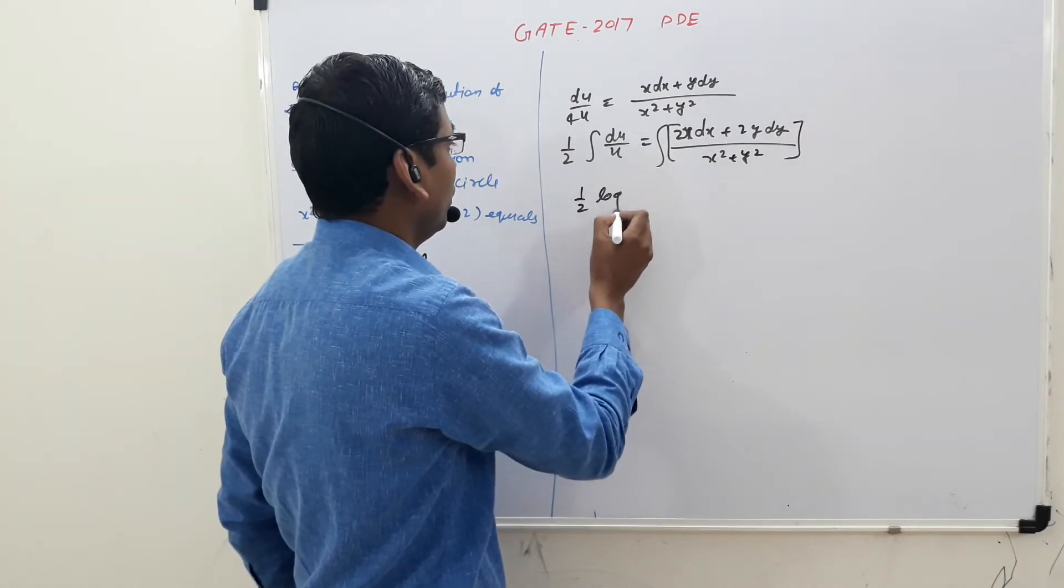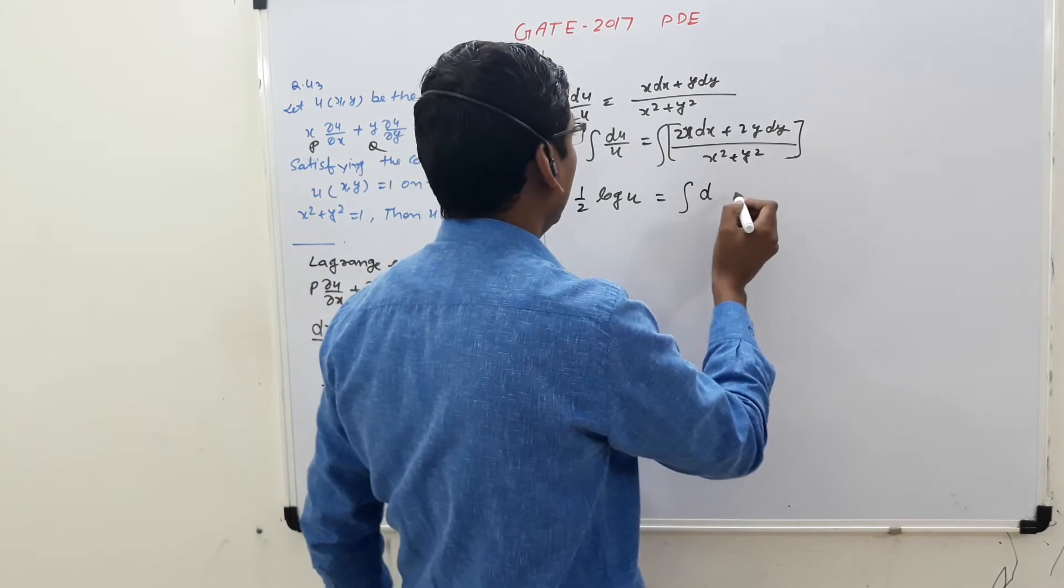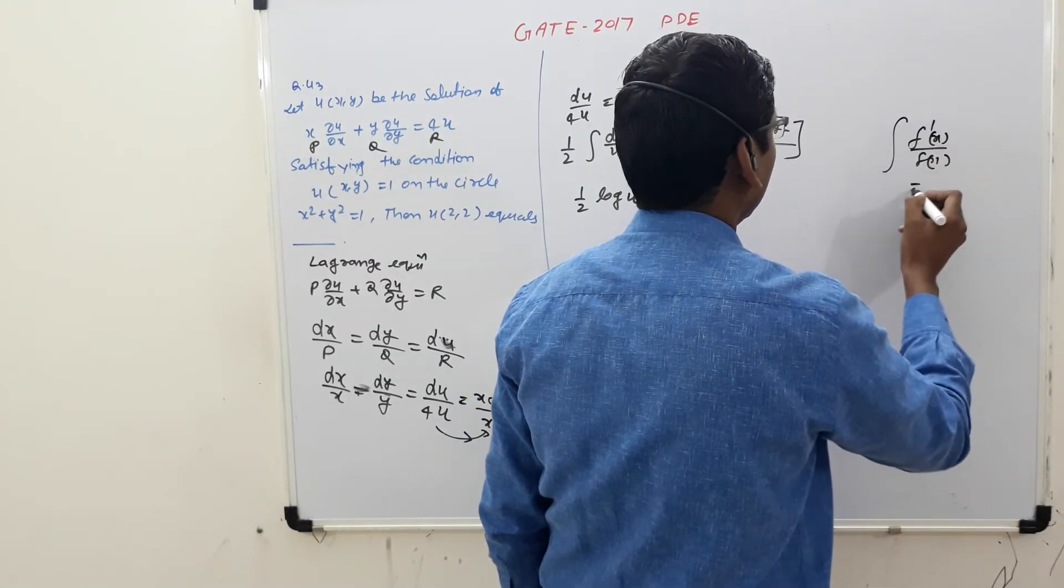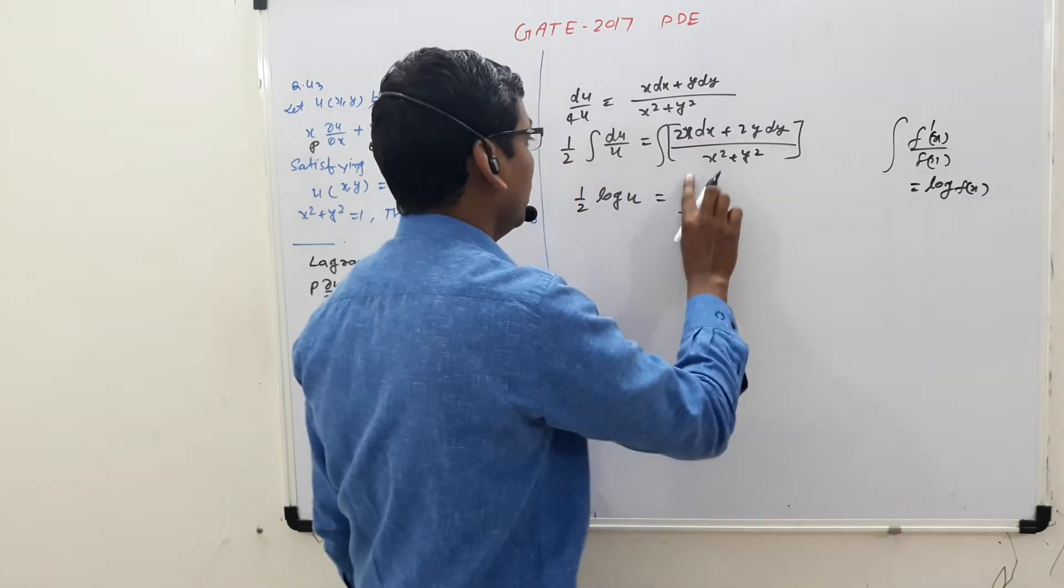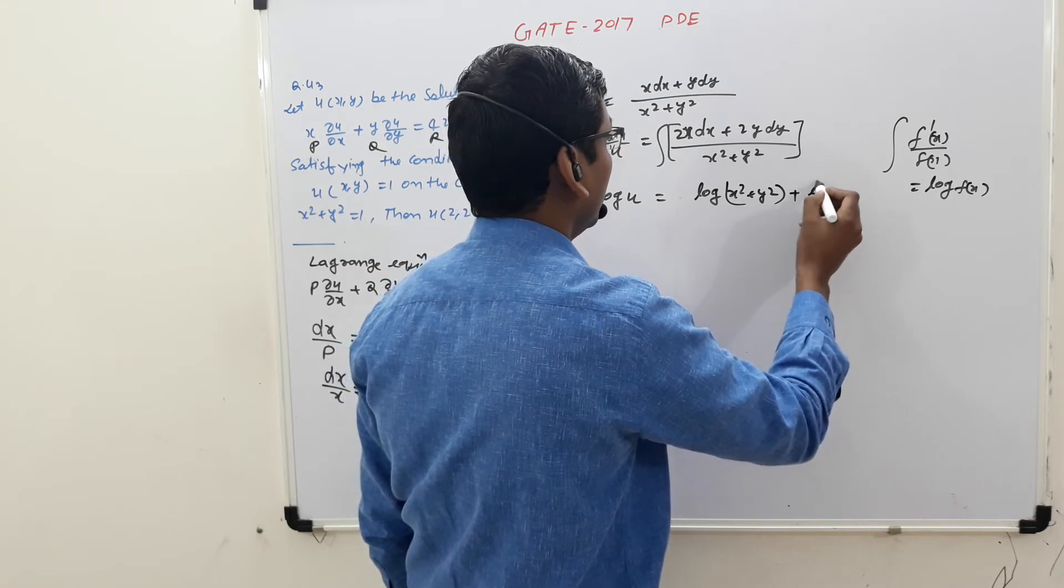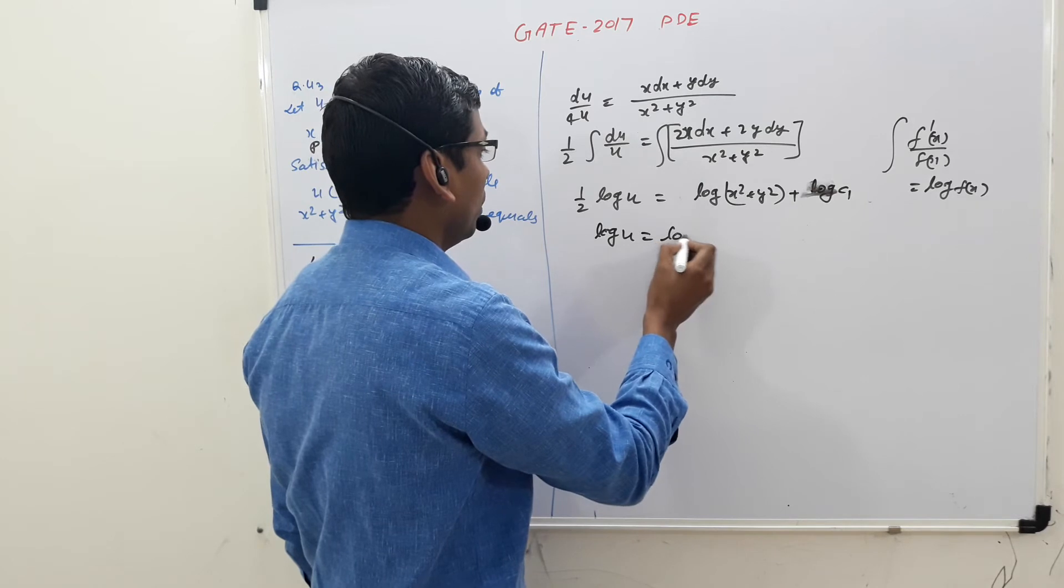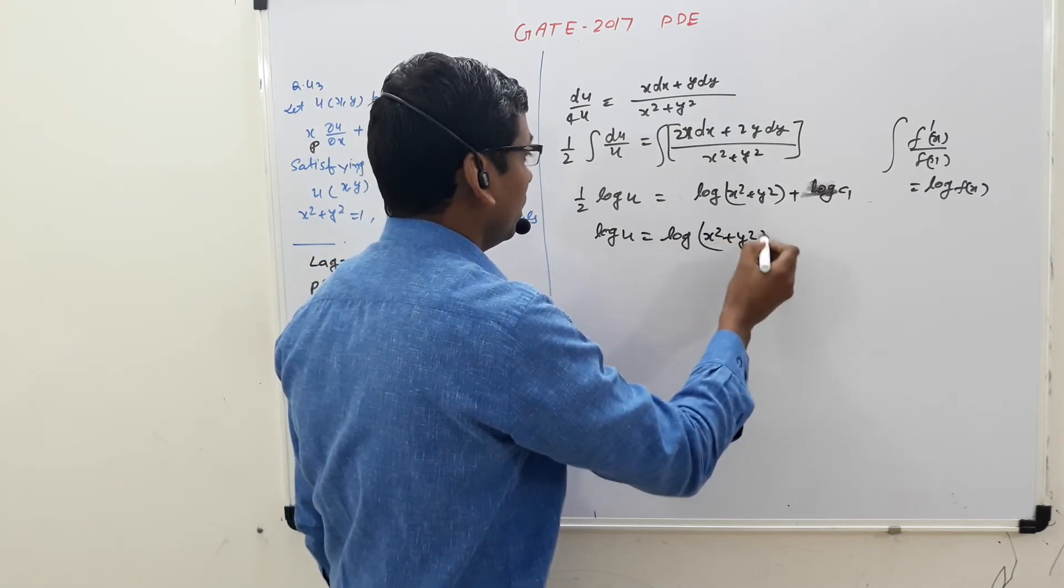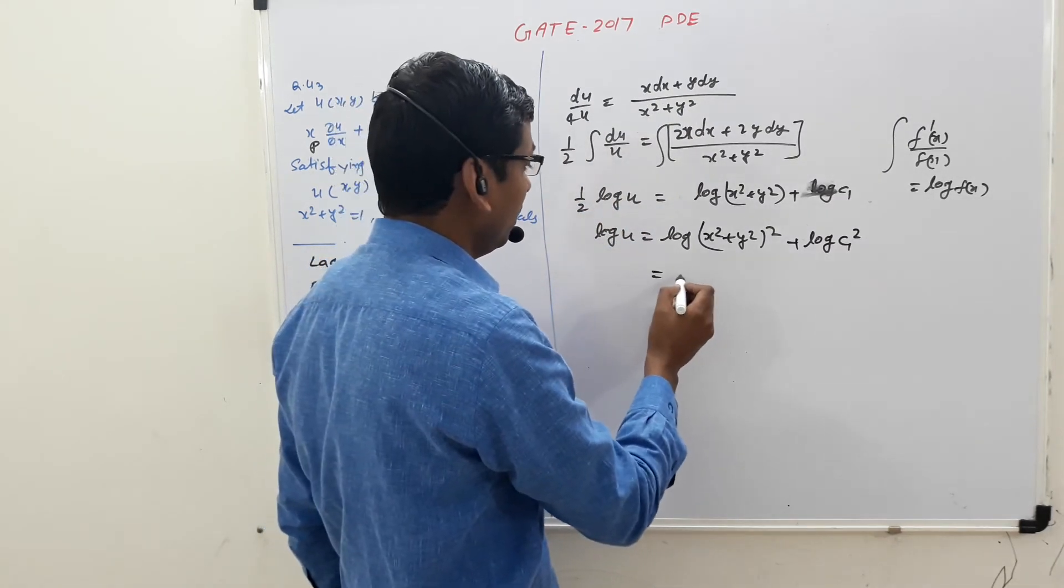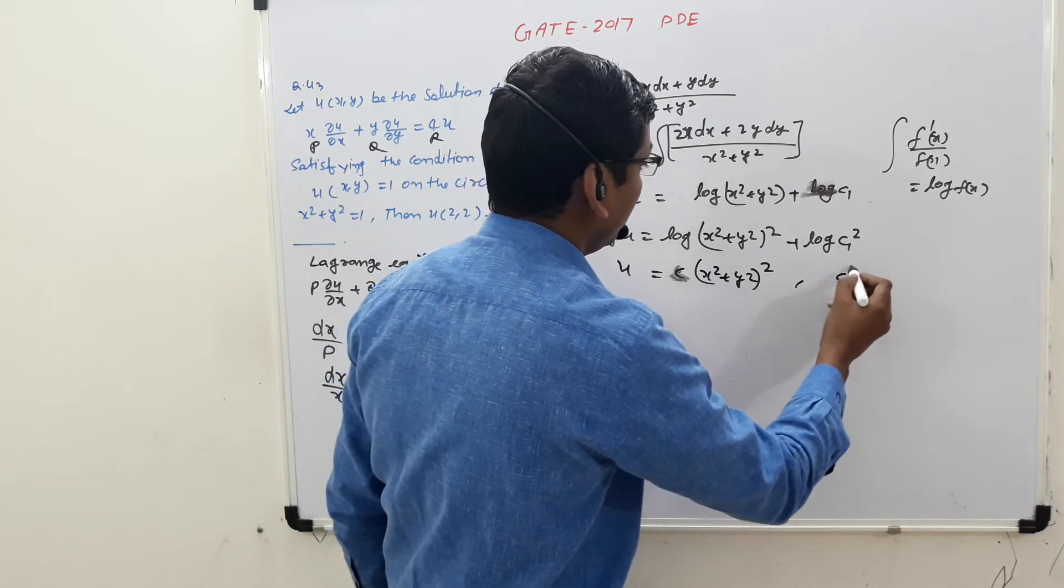Okay, 1/2 log of u is equal to this. This is f'(x)/f(x)·dx, this is log of f(x), so that is the formula: log of (x^2 + y^2) plus log of c1. So log of u is equal to log of (x^2 + y^2) whole square, and log of c1 squared. In place of c1 squared we can write c constant, so u is equal to c(x^2 + y^2)^2.